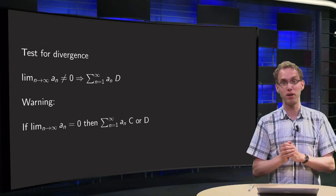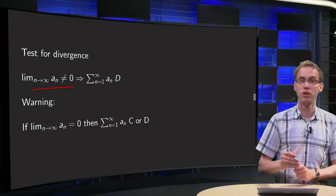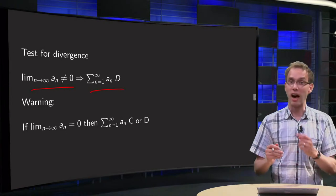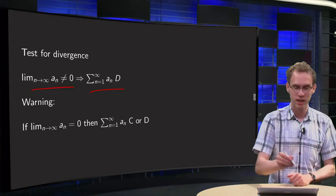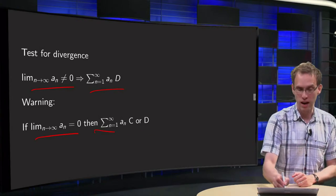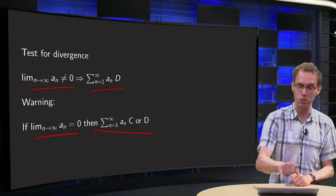Let us review the test for divergence for a moment. It says that if the terms of a series do not tend to zero, then the series diverges. And do not forget the warning: if the terms do tend to zero, then the sum can either be convergent or divergent. I don't know. The test is inconclusive.